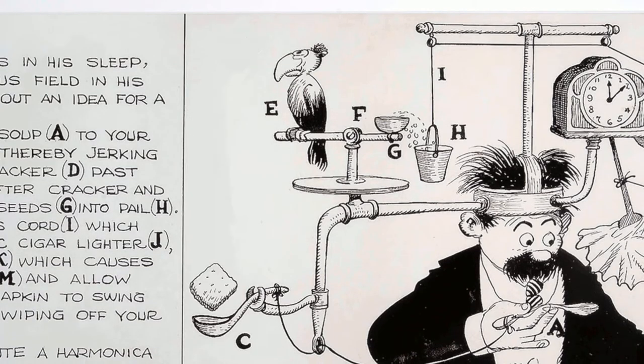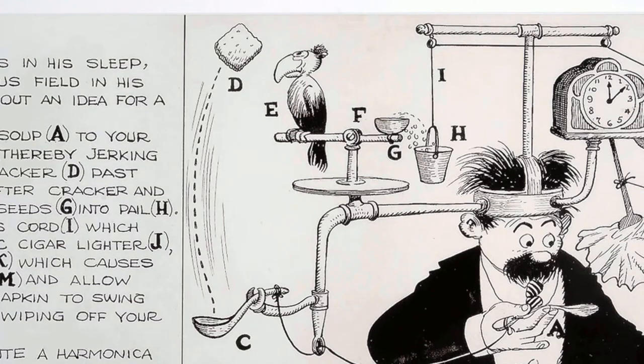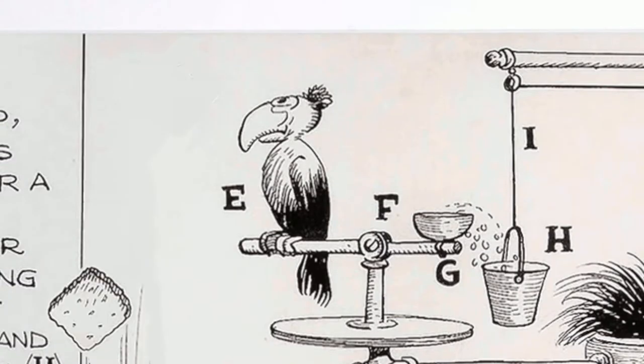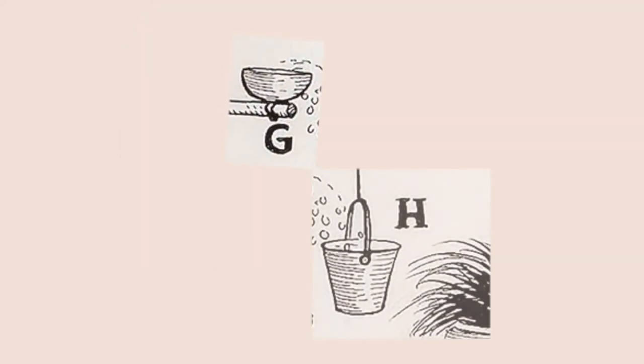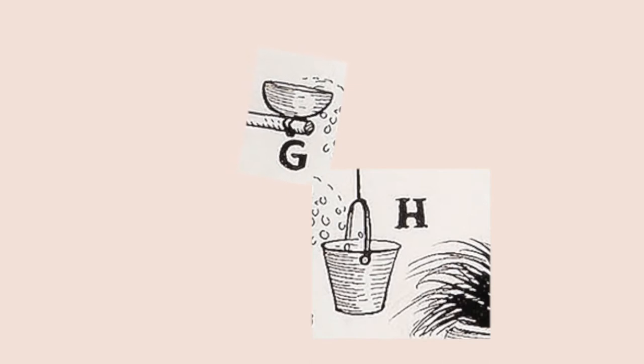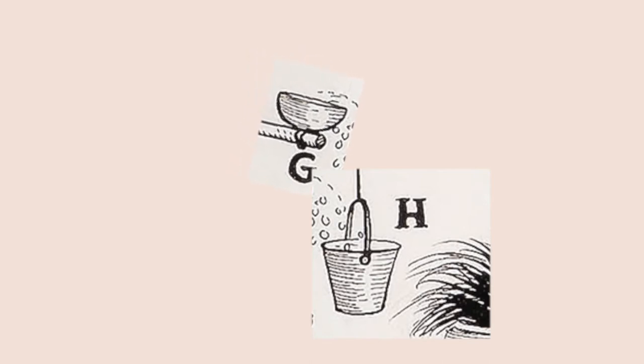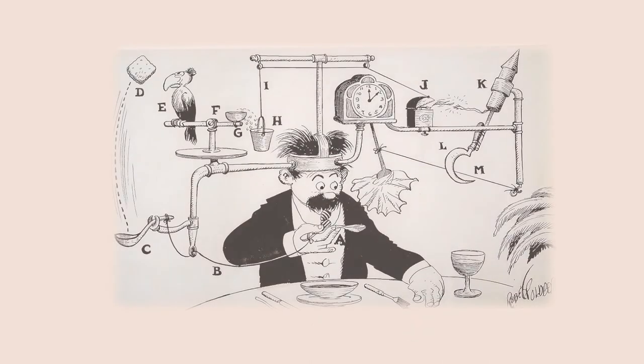And when that happens, the spoon flips up the cracker high into the air like a catapult right up in front of the hungry bird E. Now the question is, what do you think will happen when the hungry bird sees the cracker and he jumps up in flight off of the seesaw? That's right. I have a feeling that bowl G will tip over spilling all of its water into the bucket.